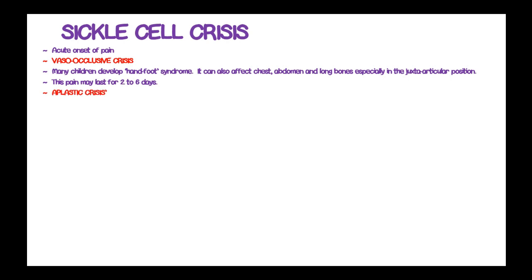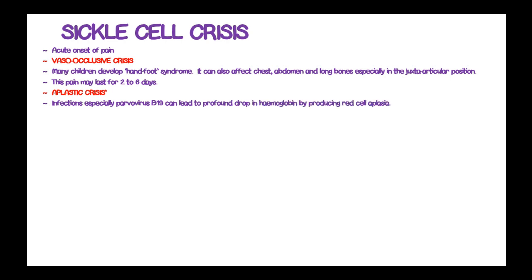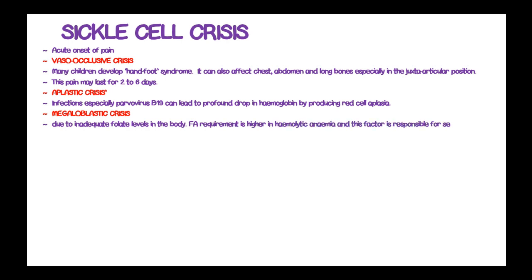The second type is aplastic crisis. Infections, especially parvovirus B19, can lead to a profound drop in hemoglobin by producing red cell aplasia. The third crisis is megaloblastic crisis, which occurs due to inadequate folate levels in the body; folic acid requirements are high in hemolytic anemia, and this factor is responsible for its severity.